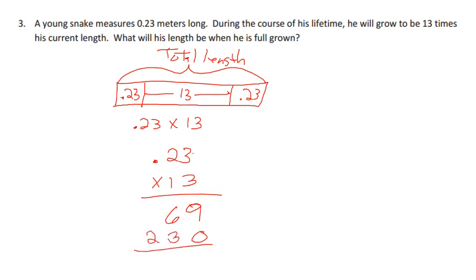3 times 3 is 9, 3 times 2 is 6. Put our placeholder, 1 times 3 would be 3, 1 times 2 would be 2, and we ended up with 299. But then we have to put the place value back in, and we can see we have two place values here we have to return. So that's 2.99, 2.99 meters long.